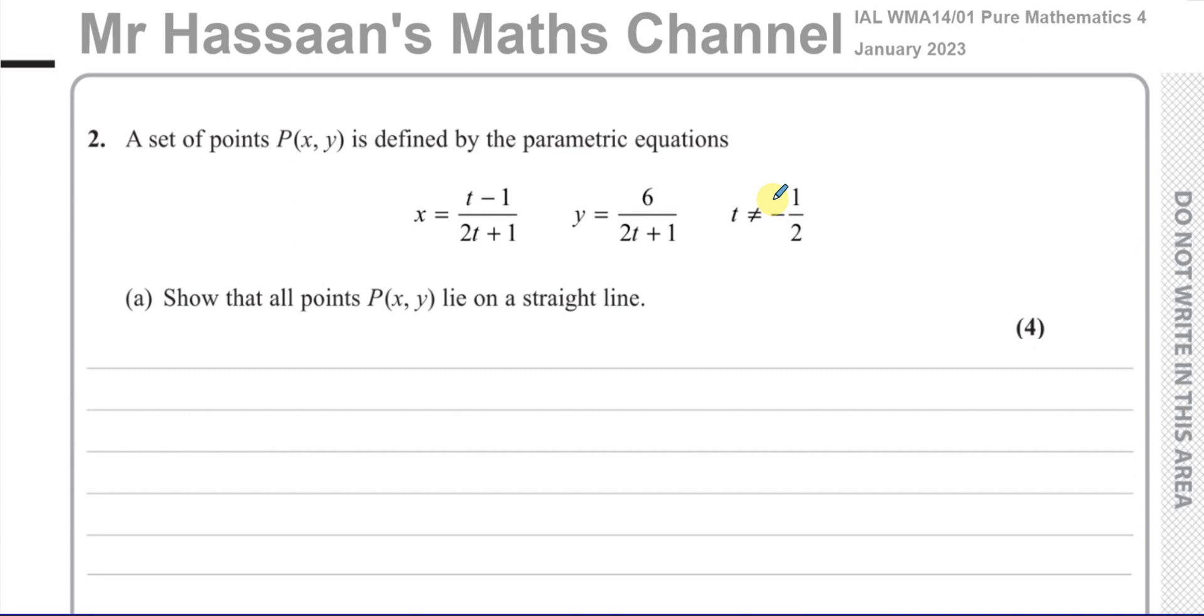So it says show that all points P(x, y) lie on a straight line. Now in this type of situation, the easiest way to show such a thing would be to rewrite this in Cartesian form, as Y equals some function of X, and show that the function of X is linear—Y equals MX plus C in that form. I want to avoid doing too much substitution.